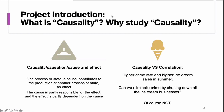What is causality and why do we study it? Causality, or cause and effect, says that one process or state — the cause — contributes to the production of another process or state — the effect. The cause is partly responsible for the effect, and the effect is partly dependent on the cause.